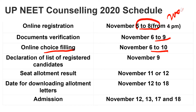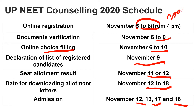Students, do the choice filling very carefully because you cannot change it later once your college is allotted. Then the declaration list of registered candidates will come on 9 November, and seat allotment result will come on 11 and 12 November. Then your allotment letters will come between 12 November and 18 November, and your admission will be on 12, 13, 17, and 18 November.